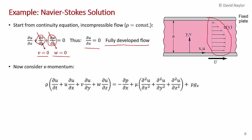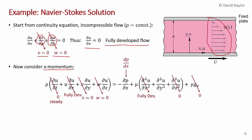Now we consider the x-momentum Navier-Stokes equation and apply simplifications. The flow is steady, so there's no change in u with time — that term goes to zero. We just showed the flow is fully developed, so the ∂u/∂x term goes to zero. We're told V and W are zero, so the other two acceleration terms also go to zero. All the acceleration terms vanish, which is generally the case for these exact solutions since otherwise the equation becomes nonlinear.